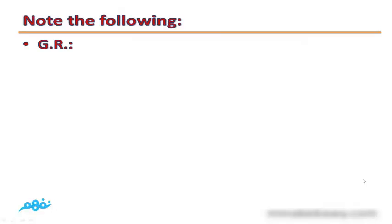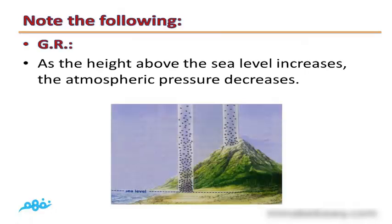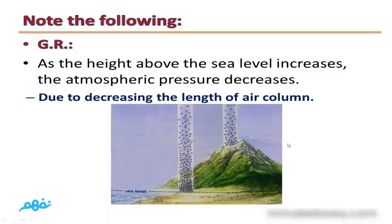Give reason: As the height above sea level increases, the atmospheric pressure decreases. If a person is on the top of a mountain, they are affected by a lower pressure than a person at sea level. This is due to the decreasing length of the air column above them.